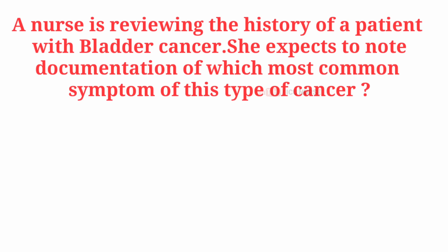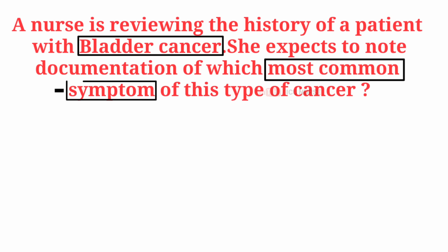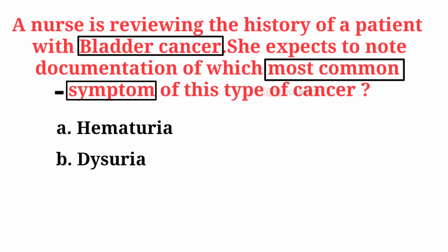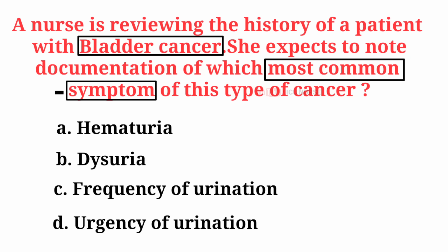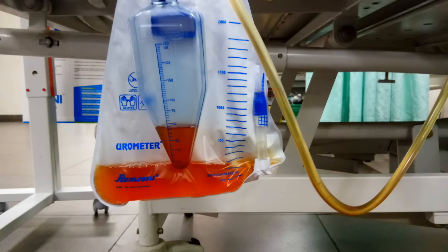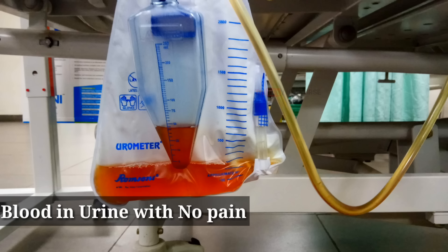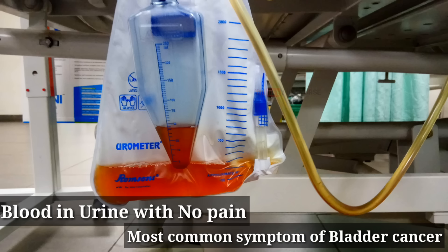A nurse is reviewing the history of a patient with bladder cancer. She expects to note documentation of which most common symptom of this type of cancer? A. Hematuria. B. Dysuria. C. Frequency of urination. D. Urgency of urination. And the correct answer is A — hematuria. Blood in the urine with no pain is the most common symptom of bladder cancer.